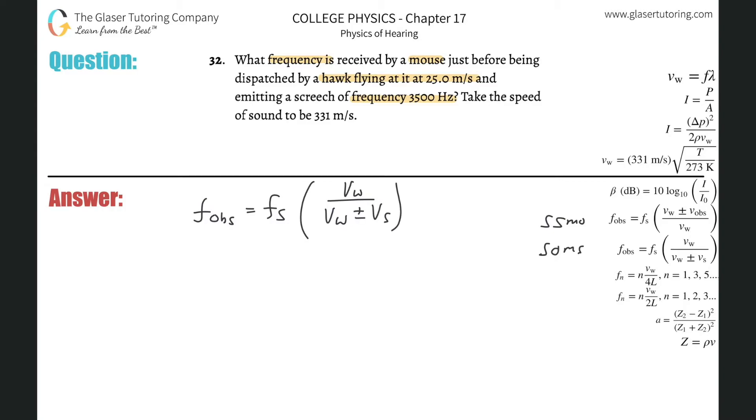One of these is the one that we need. Whenever you have a source moving toward the object, it's always going to be the minus value, because this denominator then decreases, that increases the overall fraction, and that will increase the frequency.